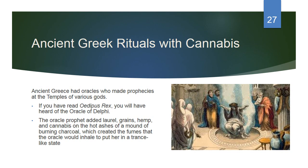Ancient Greece had oracles who made prophecies at the temples of various gods. The oracle prophet at Delphi added laurel grains, hemp, and cannabis onto the hot ashes of burning charcoal, creating fumes that the oracle would inhale to put herself into a trance-like state. This ritualization — putting cannabis as part of society — legitimizes it in ways we are beginning to see now in modern-day cannabis rights changing and becoming more a part of day-to-day life.